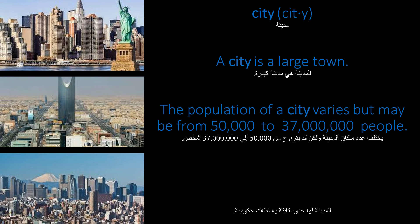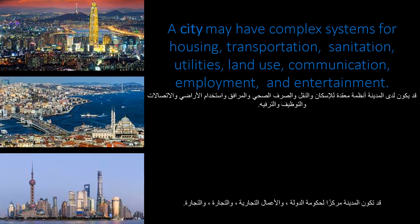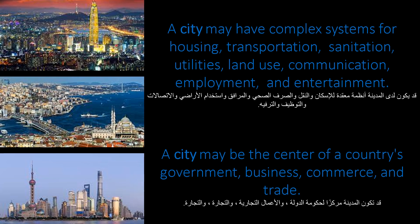A city is a large town. The population of a city varies but may be from 50,000 to 37 million people. A city has fixed boundaries and government powers. A city may have complex systems for housing, transportation, sanitation, utilities, land use, communication, employment, and entertainment.